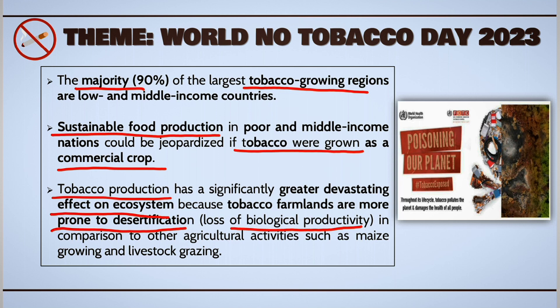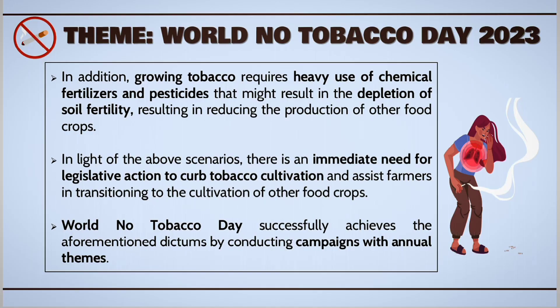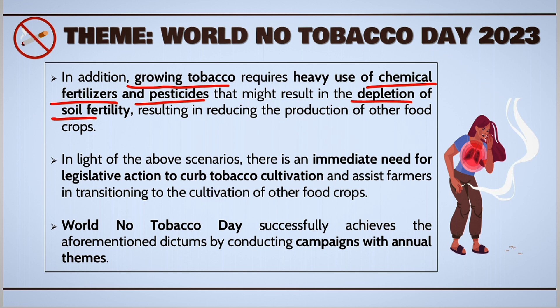If farmlands are used for cultivation of tobacco instead of sustainable food crops, the cultivation of tobacco requires heavy use of chemical fertilizers as well as pesticides. This will definitely result in depletion of the fertility of the soil and ultimately reduce the production of other food crops.